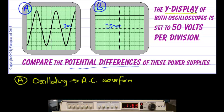How many divisions are there from the center line? We've got 1, 2, 3, and 4 divisions. So 4 divisions multiplied by the scale which is 50 volts per division gives us 200 volts. This is the amplitude of the waveform.